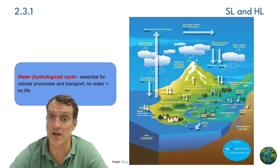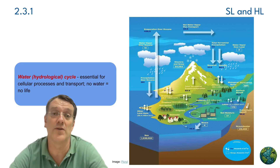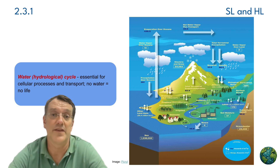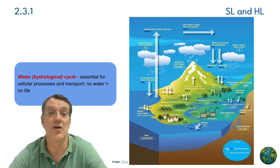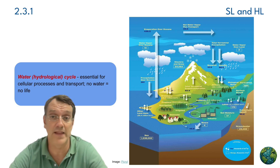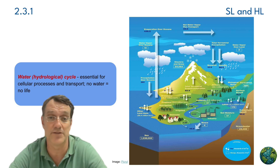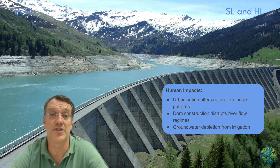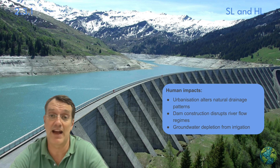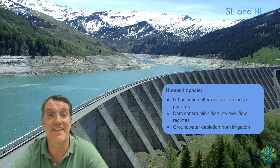The water cycle, or hydrological cycle, is fundamental to all life on Earth. This diagram shows how water moves between the atmosphere, land, and oceans through processes like evaporation, precipitation, and transpiration. Human infrastructure like this dam significantly impacts the water cycle. While dams provide benefits like hydroelectric power and flood control, they disrupt natural river flow regimes and can alter local ecosystems.